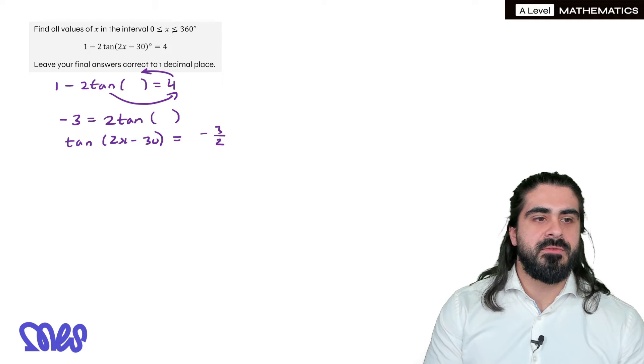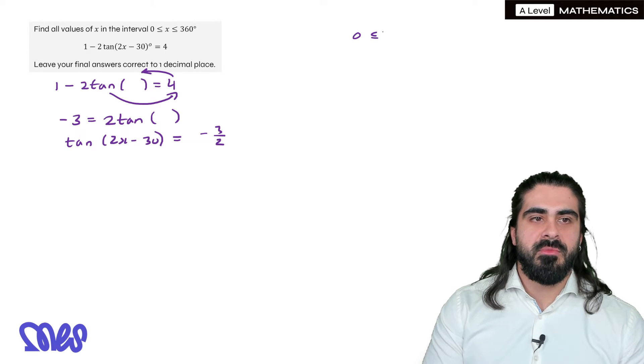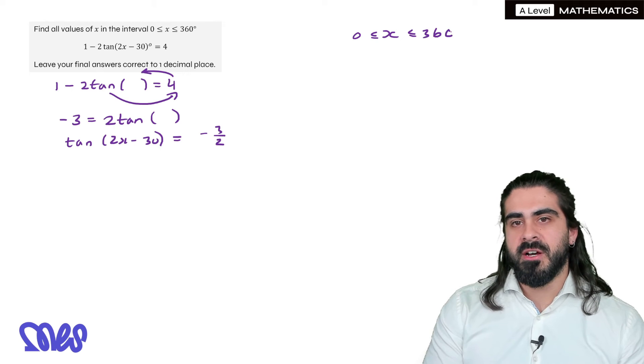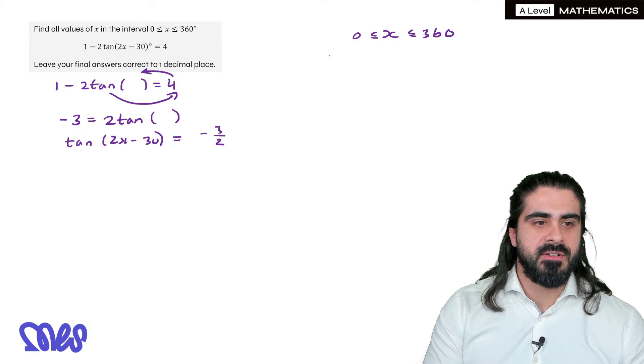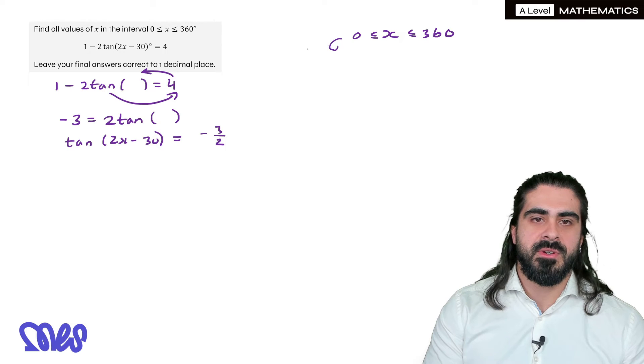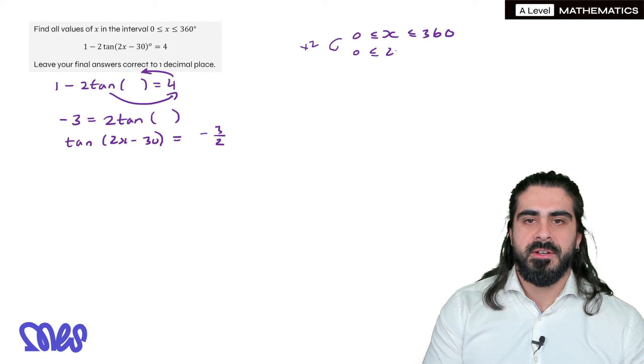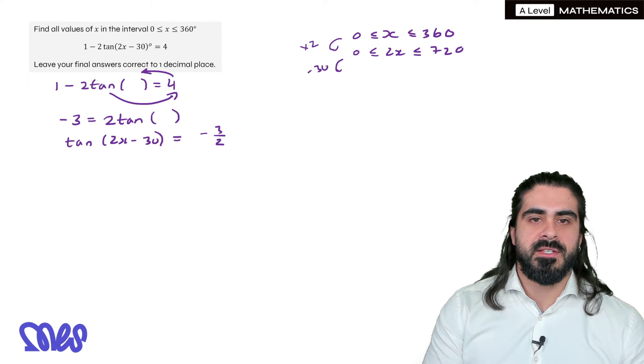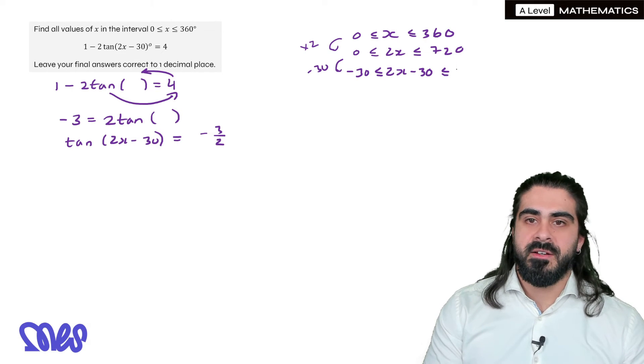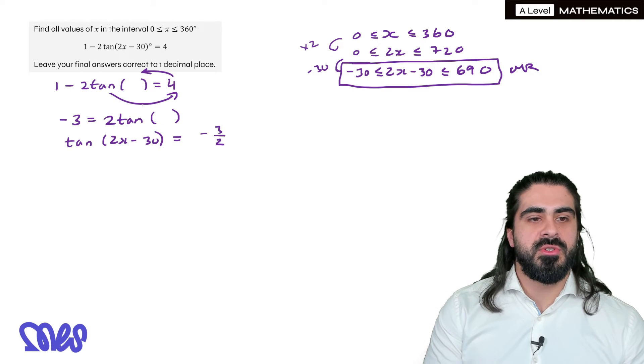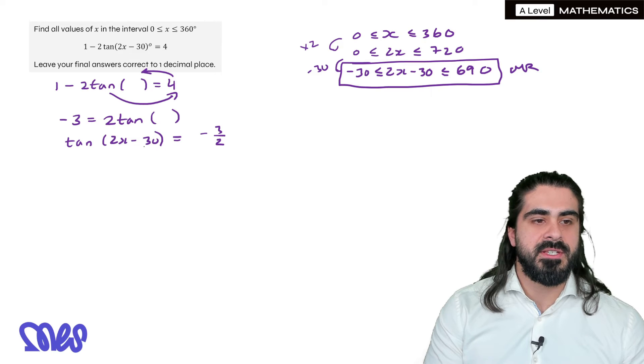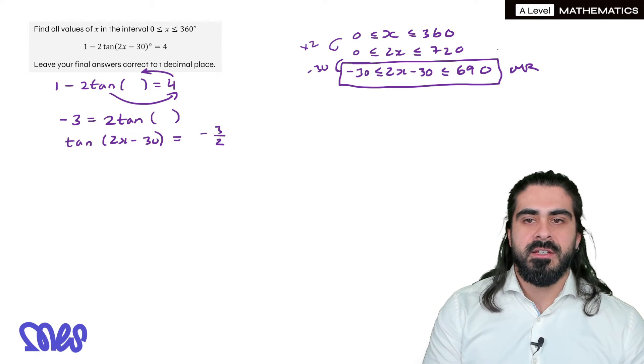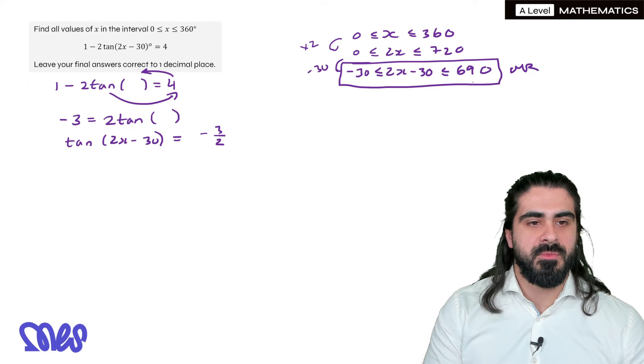Now we identify that the angle is different to the one in question. So we just need to slowly modify it. As you get better, you can do this really quickly. I'll tell you how you do it really quickly in a second. But they have 2x minus 30. So the first thing we're going to do is we're going to times by 2 for our modified range. That will take us to 720. And then we're going to minus 30. So we get minus 30, 2x minus 30. And we have 690. The quick way of doing it is you take the endpoints, 0 and 360, and you just sub it in. So 0, when you sub into here, you get minus 30. When you sub in 360, you get 690. So that's the quick way of working out the endpoints for the modified range.